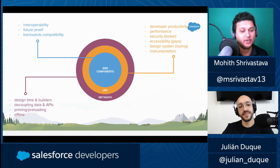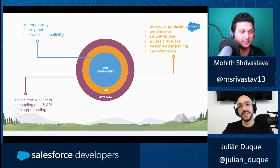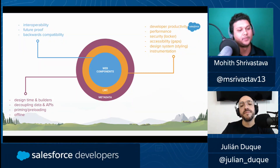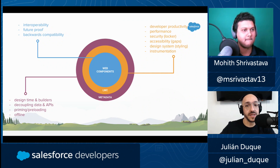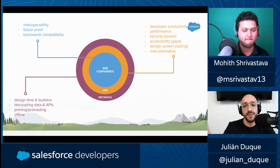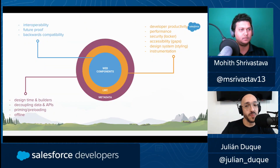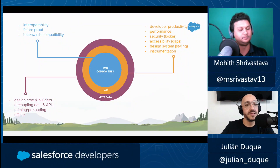So we have Web Components, then we have the LWC engine, and then Lightning Web Components for Salesforce with the Salesforce metadata context. One thing worth mentioning is that Web Components is a standard, so Lightning Web Components uses the standard defined for creating Web Components. If we're learning Web Components with Lightning, we are learning the standards to develop web applications.